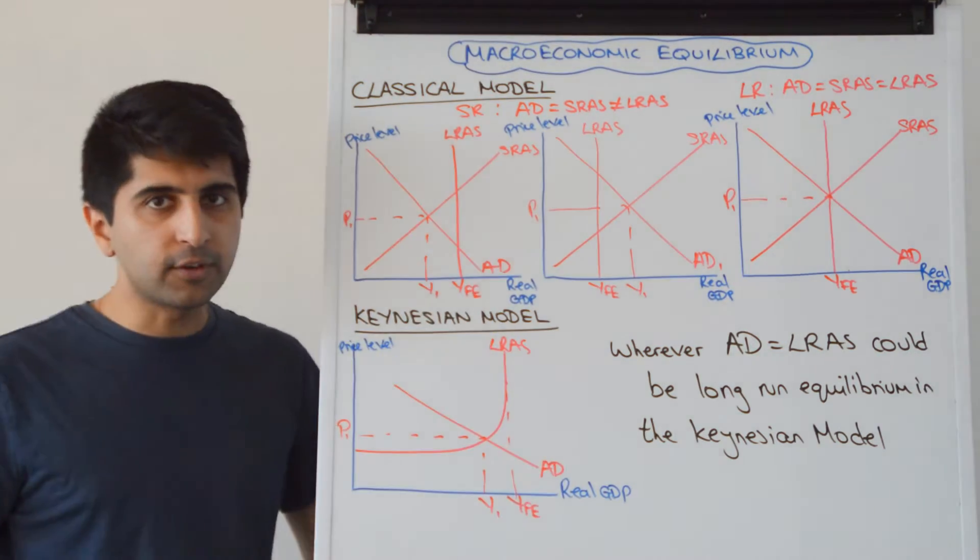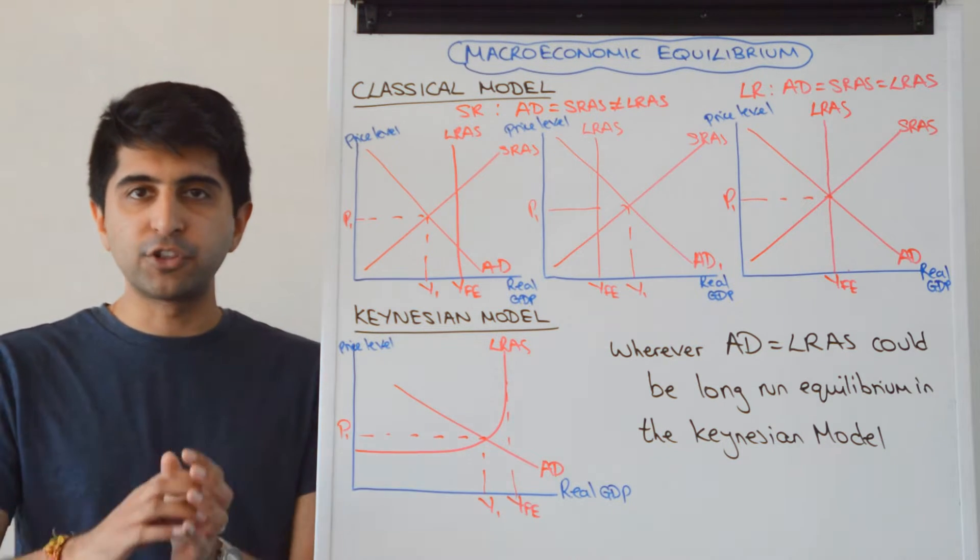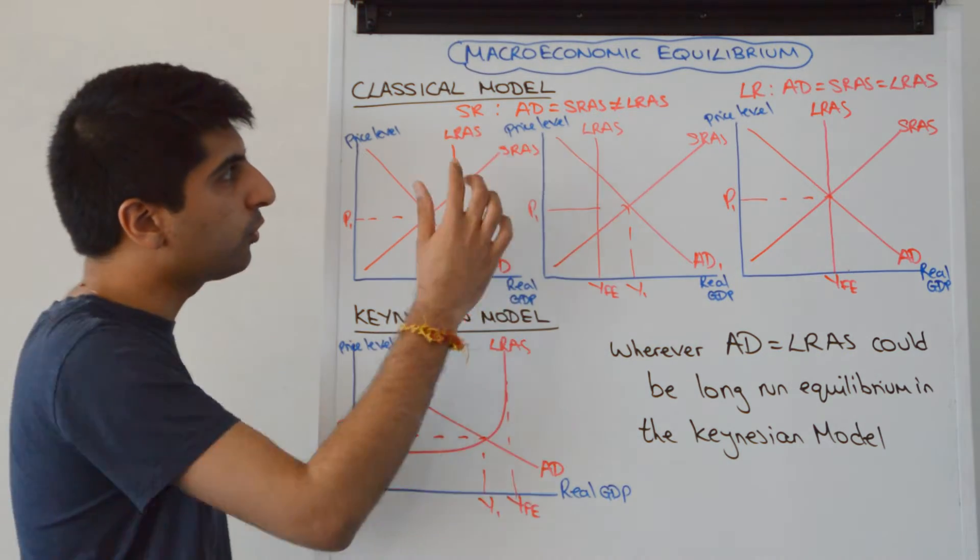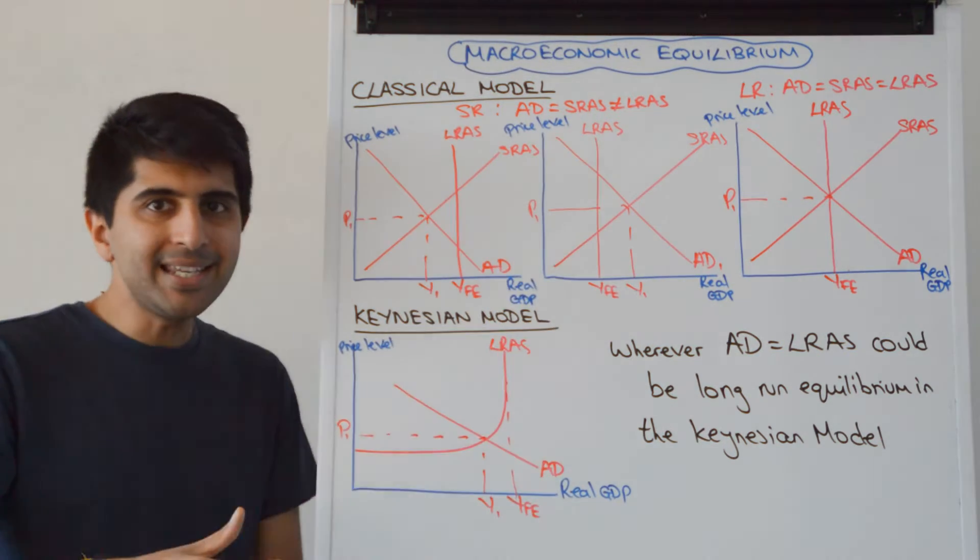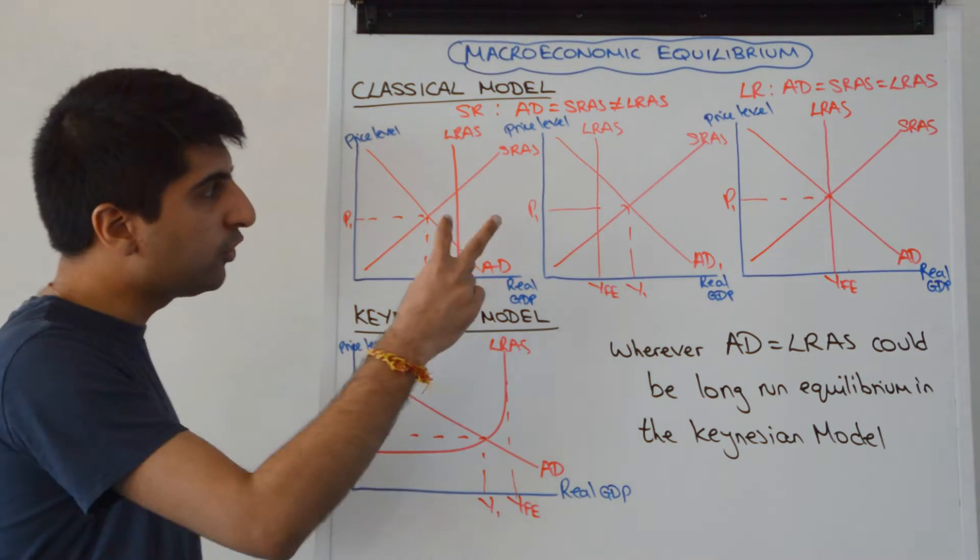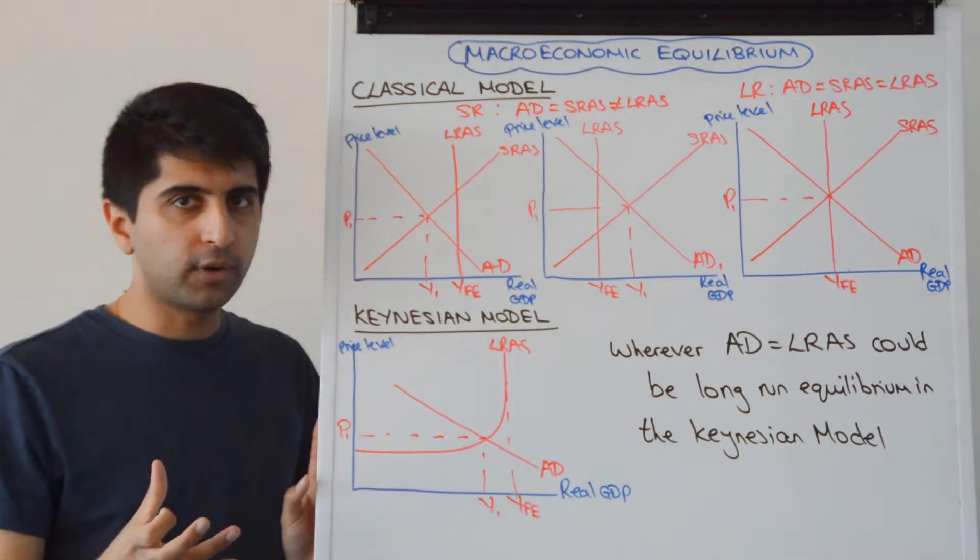Let's go straight to the classical model. Classical economists believe there are two types of equilibrium: short-run macro equilibrium and long-run macro equilibrium. Short-run equilibrium occurs where AD equals SRAS but does not equal LRAS. There are two ways of showing that. This diagram here and the middle diagram here are both short-run equilibrium.